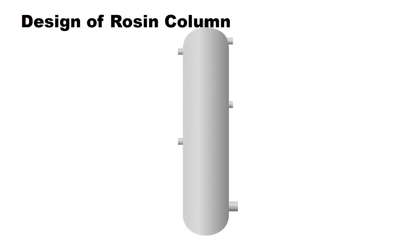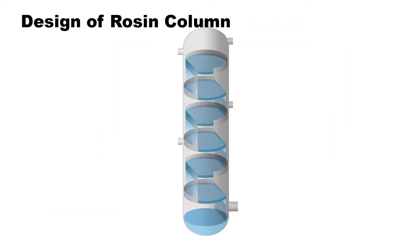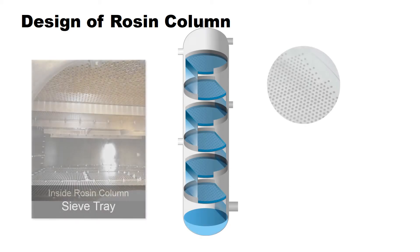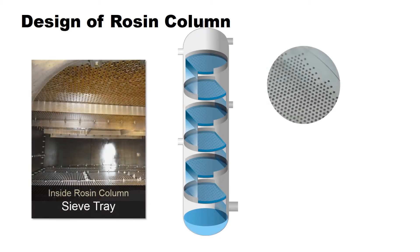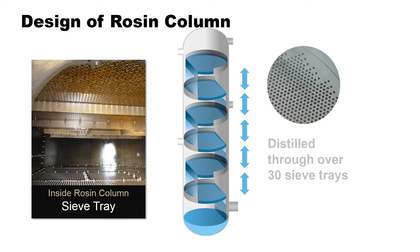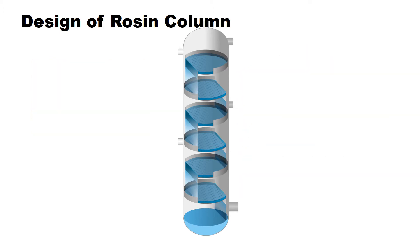Sieve trays are installed inside the rosin column to distill rosin. Simple distillation is carried out by each sieve tray, which is repeated all the way up the column's 30-plus sieve trays.